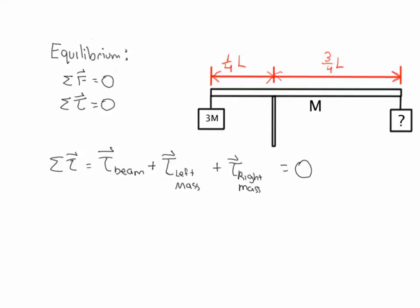There is the torque that the beam exerts — remember the beam has mass, and it acts about its center of mass. Since it's a beam of uniform density, the center of mass is at its midpoint, and its mass is being pulled downward. There is also the left mass, which is being pulled downward, and finally the right mass, which is also being pulled downward. Those are the three torques exerted around the pivot point.